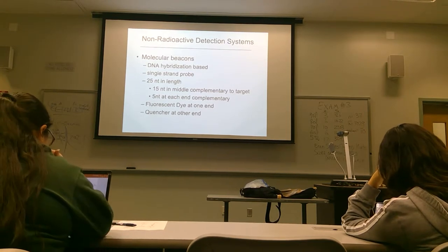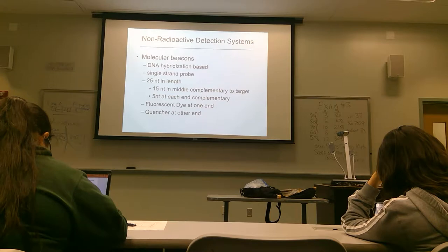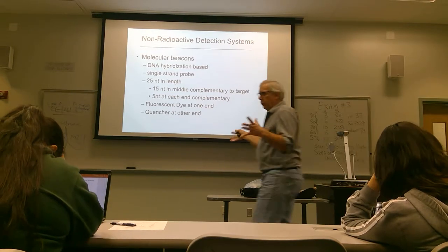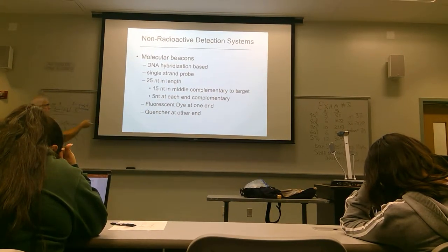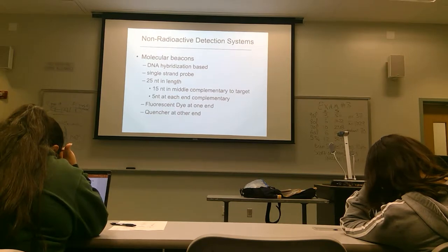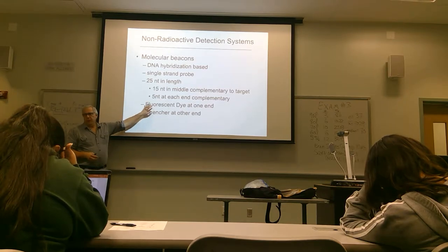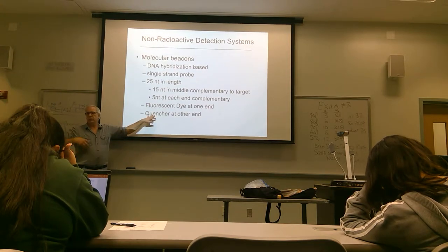Another way of doing non-RAD detection that doesn't rely on PCR is what's called a molecular beacon. It's based on hybridization rather than amplification. You have a single-stranded DNA probe that's 25 nucleotides in length: 15 nucleotides in the middle complementary to your target, and the five nucleotides at each end are complementary to each other — so we're designing a hairpin, a 15-nucleotide loop with five base pairs as the stem. A fluorescent dye is attached to one end and a quencher to the other. If they're in close proximity, whatever fluorescence is generated when you excite the dye is absorbed by the quencher, so you don't see any light emitted.